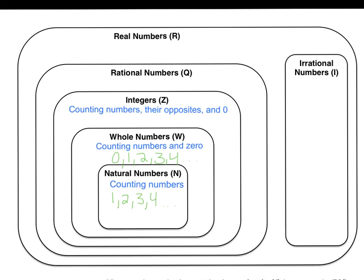Next we have integers. Integers include counting numbers, their opposites, and zero. Recall that opposites are like negative four and positive four. They're the same distance from zero, but one is negative and one is positive.